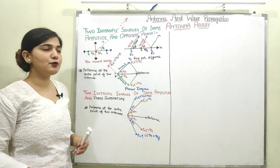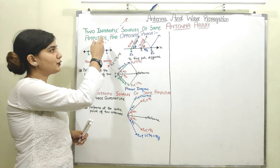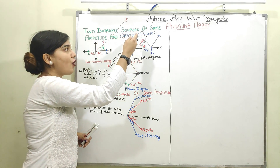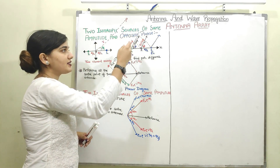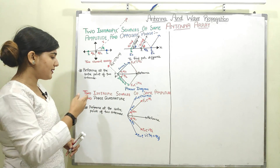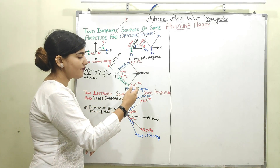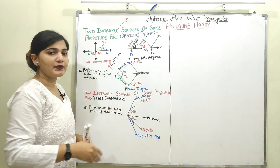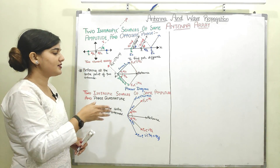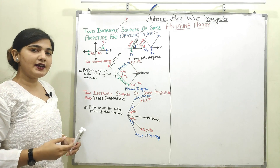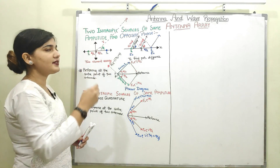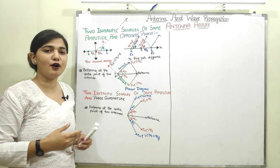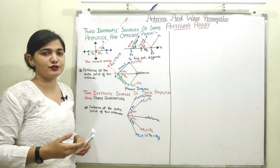In this video, we will take two cases. First is when the two isotropic sources are of same amplitude and opposite phase. And in the second case, I am taking two isotropic sources of same amplitude and phase quadrature. We will begin our discussion with the first case in which we are taking opposite phase and same amplitude of two isotropic point sources.